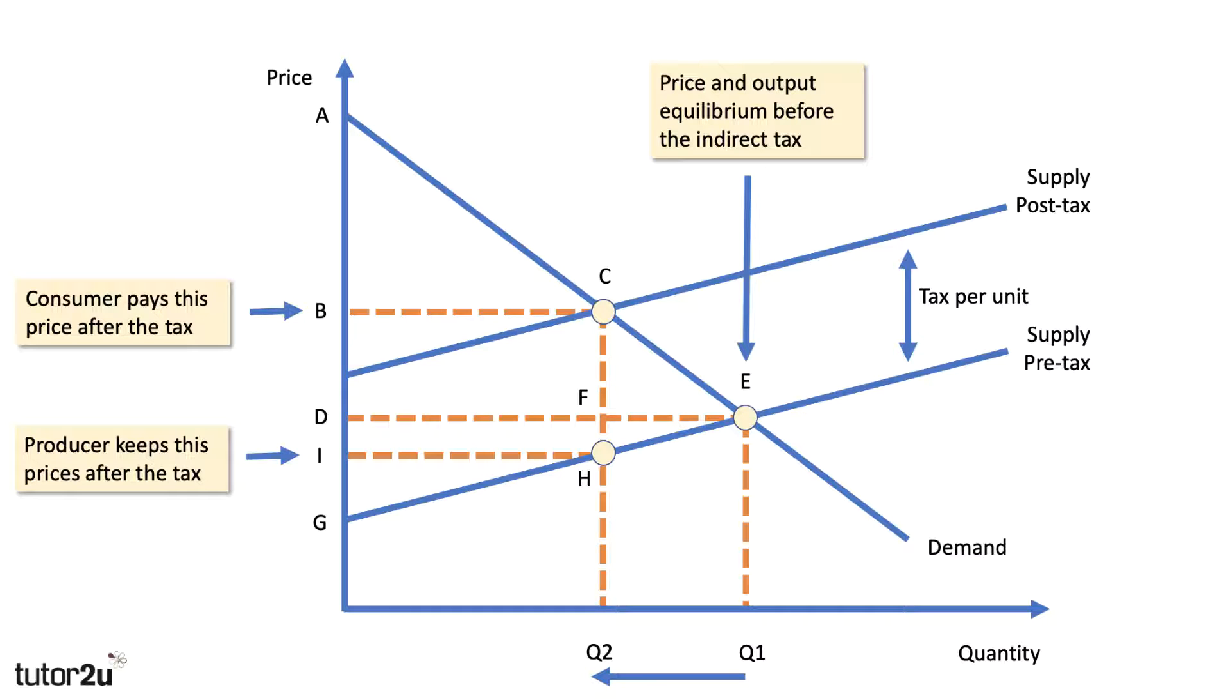Well, you can see that as a result of the tax, quantity bought and sold has gone down to Q2, and the producer is getting less per unit. That's clearly going to have an effect on producer surplus. And if you bring producer surplus into your answers, questioning on indirect taxes, you are going to get a better mark for analysis. So hopefully this step-by-step thing will help you.